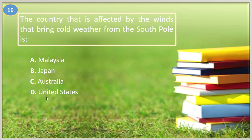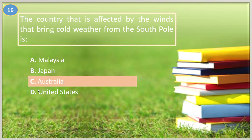Number sixteen. The country that is affected by the winds that bring cold water from the South Pole is: A. Malaysia, B. Japan, C. Australia, D. United States. The answer is letter C, Australia.